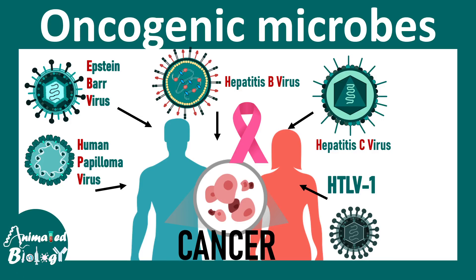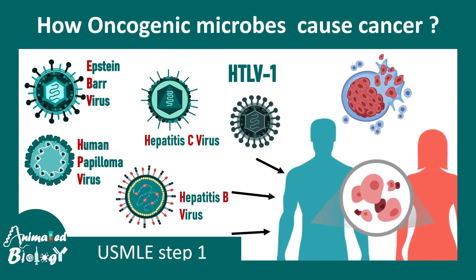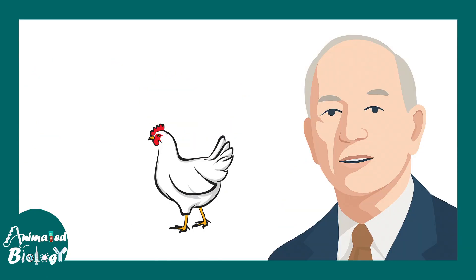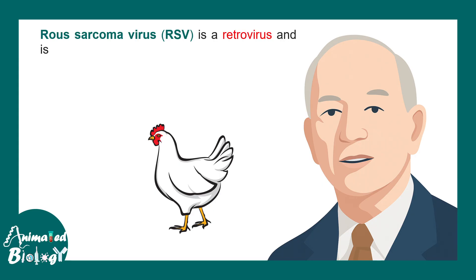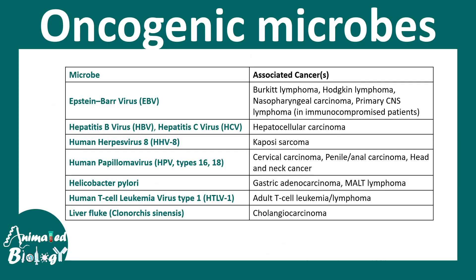In this video we'll talk about oncogenic microbes — this is a USMLE Step 1 high yield video. Viruses can cause cancer, as was first shown by Peyton Rous who discovered the Rous sarcoma virus, a retrovirus known to cause cancer. This was the first virus known to possibly cause sarcoma, and since then multiple viruses have been identified as causes of cancer.